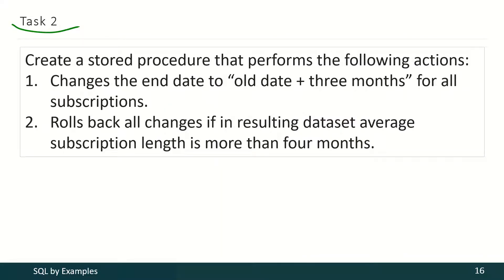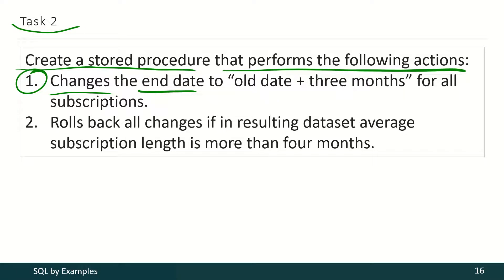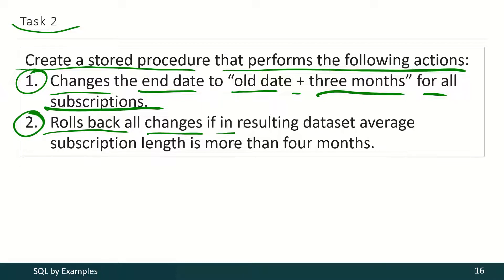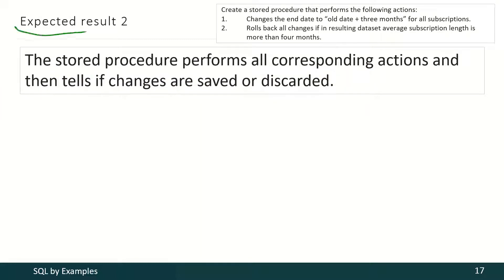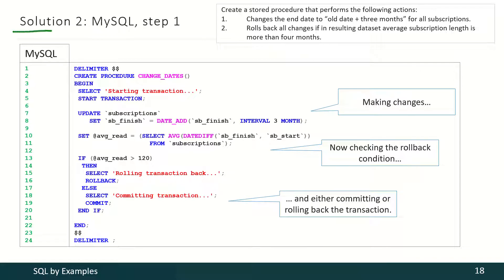In the second task we have to create a stored procedure that performs the following actions. First it should change the end date to old date plus 3 months for all subscriptions. Then it should roll back all changes if in the resulting dataset the average subscription length is more than 4 months. The expected result is that the stored procedure performs all corresponding actions and then tells if changes are saved or discarded. The solution here is even simpler than in the previous task.